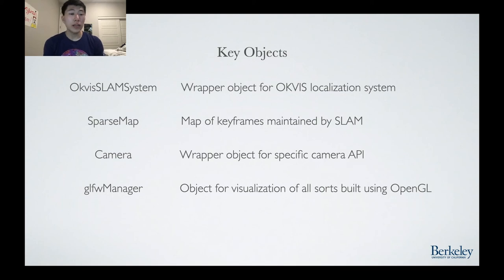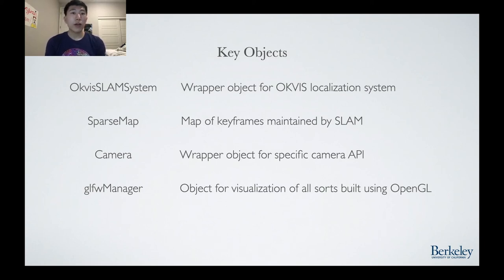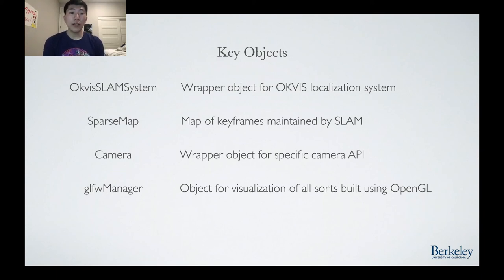A few key objects for SLAM inside OpenArc are listed here. OkVis SLAM system is the main API for OpenArc's SLAM system — new camera frames and inertial data are pushed into this object and pose estimations are outputted. SparseMap is the object maintaining a map of keyframes for detecting loop closures. There are actually several sparse maps stored at any given time, reflecting the loss-of-localization SLAM fix implementation in which multiple maps are created until they can be merged back together. The camera class is an abstract class which wraps the specific camera API to pull new images and IMU data. GLFW Manager manages the GUI of the SLAM system, useful for displaying the results of either SLAM or real-time 3D reconstruction.